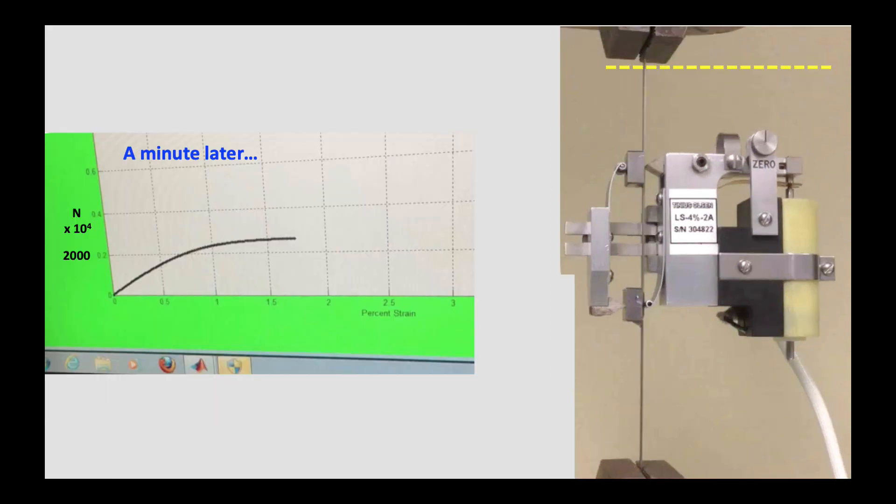A minute later, we see that our original line here has now moved up to that point there, and that was our original straight line where the spoke is elastic. That's the yield point. And now we have gone beyond the yield point up into this plastic region.